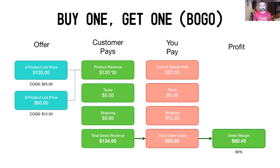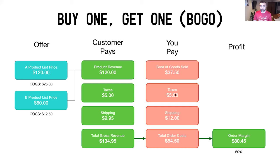The COGS on product B is $12.50 — half of product A's $25. The customer is still paying you $120 — exactly what you're asking — but they're getting a second product as added value. So product revenue is $120, plus $5 in taxes and $9.95 in shipping, giving total gross revenue of $134.95. On the cost side, you're paying $25 for product A's COGS and $12.50 for product B's COGS, totaling $37.50.